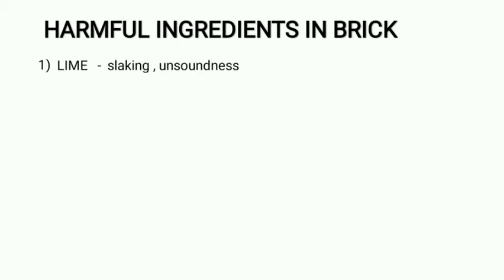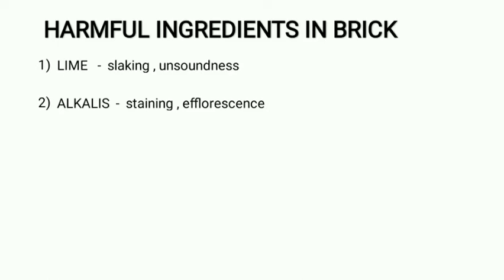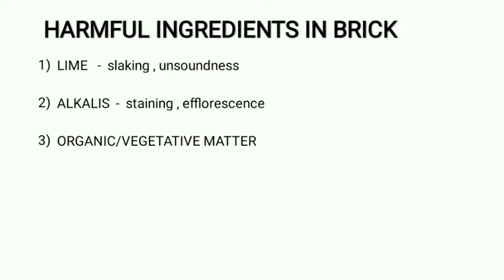First is lime. We have already seen this in the first part. If the lime is in excess, it will cause slaking and leads to unsoundness in bricks. Second is alkalis. Alkalis cause staining and efflorescence. Third is vegetative or organic matter. If vegetative or organic matter is present in our brick, it will decompose over time, leading to micro-cracks in the brick, making the brick porous and reducing its load-carrying capacity.